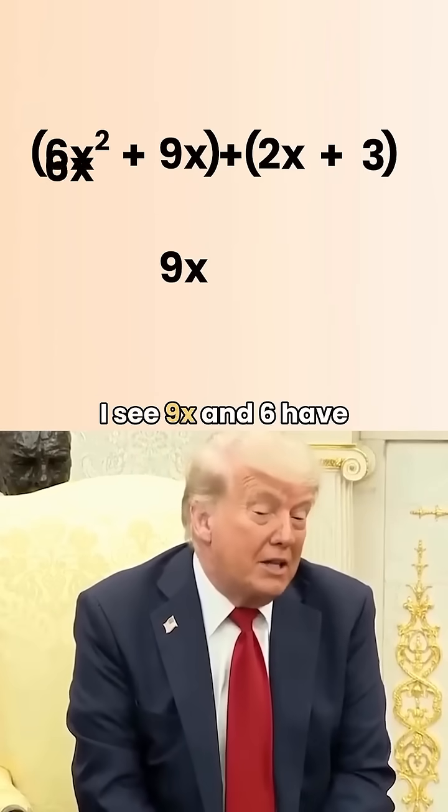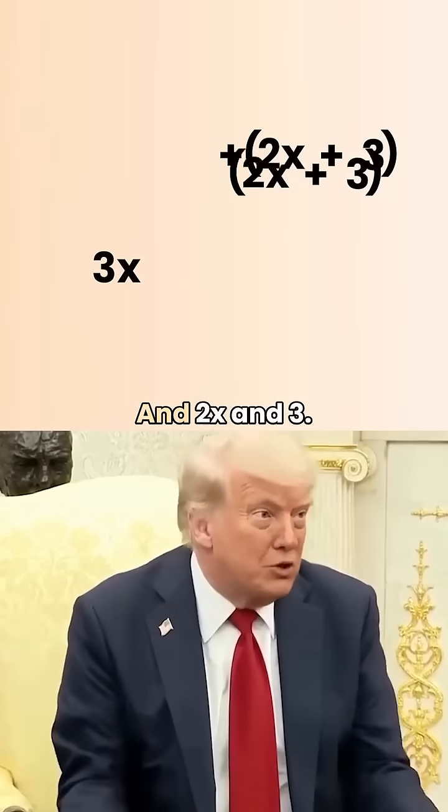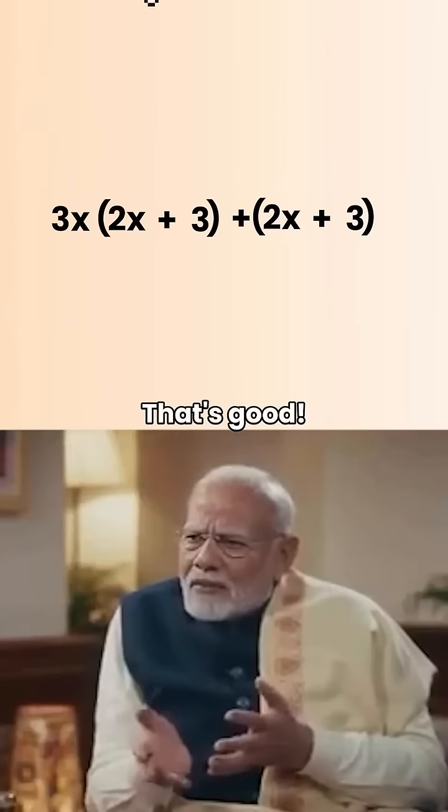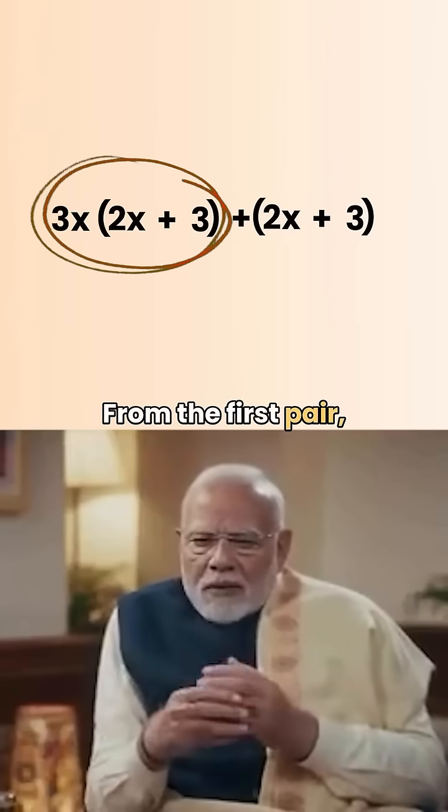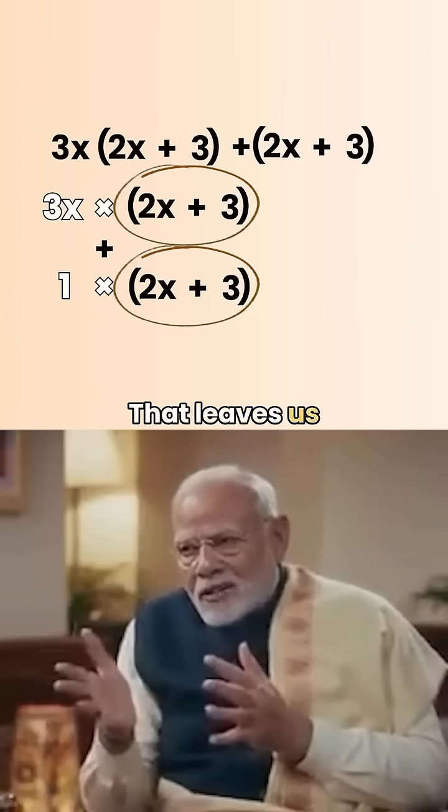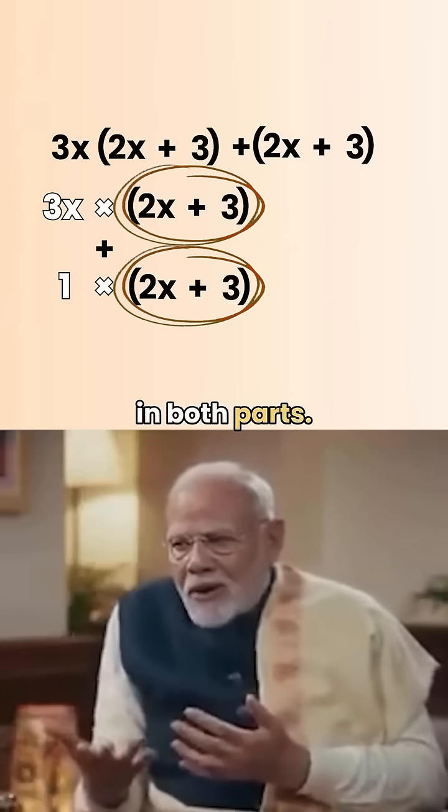I see 9x and 6 have a 3 in common. And 2x and 3. Well, we can't pull much, but the expression might repeat. Very observant. From the first pair, we take out 3x. From the second, we can take 1. That leaves us with 2x plus 3 in both parts.